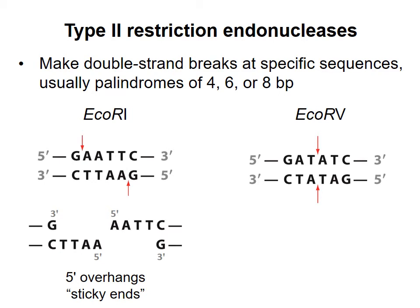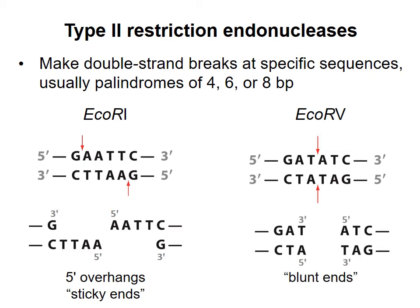Notice that because of the staggered nature of the cut sites, the 5' end extends beyond the 3' end of the DNA on each side of the newly created double strand break. These ends are referred to as 5' sticky ends. The four bases of the 5' overhang are available to base pair with the sticky end that is complementary. In contrast, the two cuts made by EcoRV occur in the exact middle of the recognition sequence. This results in products with no overhangs, also called blunt ends.